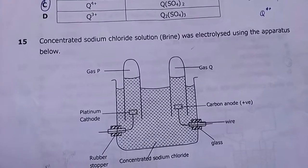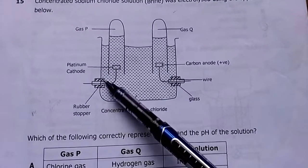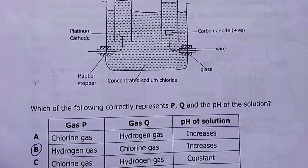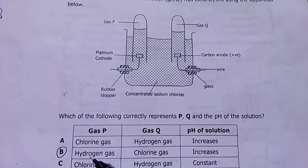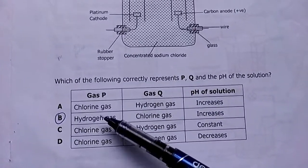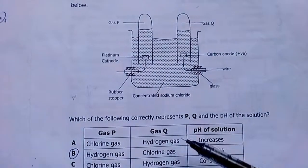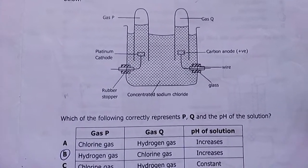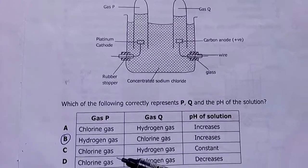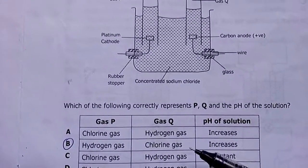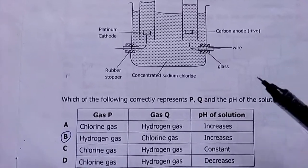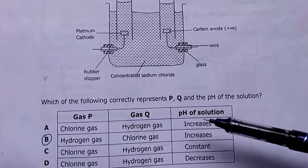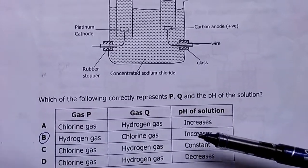Number fifteen: concentrated sodium chloride solution (brine) is electrolyzed using platinum/carbon electrodes. Which represents P, Q and the pH of the solution? Hydrogen gas is produced at P (cathode), chlorine gas at the other electrode from the sodium chloride. Because hydrogen is removed from water, hydroxide ions remain in solution, causing the pH to rise and become more basic. My answer is B.